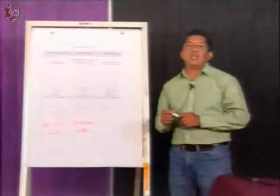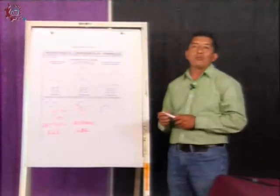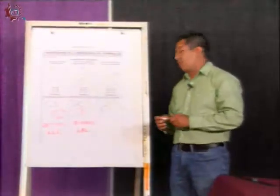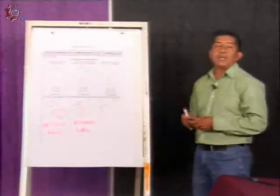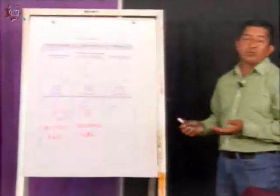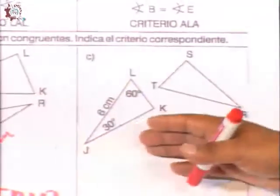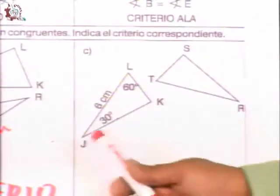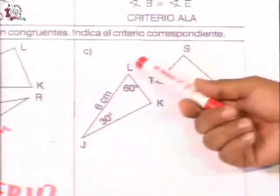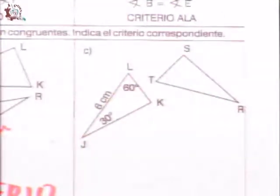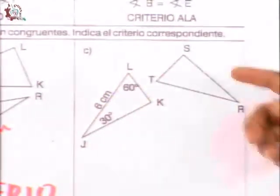Tenemos ya dos criterios de congruencia para los triángulos. Vamos con el tercer criterio. Ahora nos pide que dos ángulos homólogos y el segmento o lado en común sean iguales, que midan lo mismo. Tenemos aquí otro ejemplo del ángulo J, K, L, donde ya me señala dos de sus ángulos: el ángulo J de 30 grados y el ángulo L de 60 grados. Voy a hacer uso del transportador y verificar que exactamente tengan esas mismas medidas el otro triángulo.